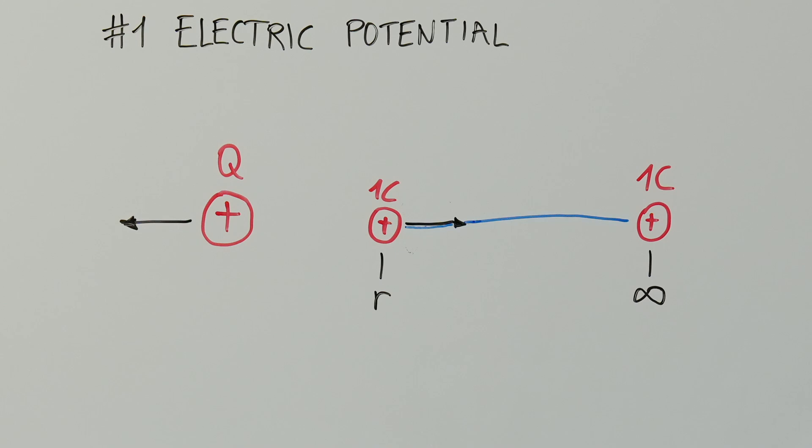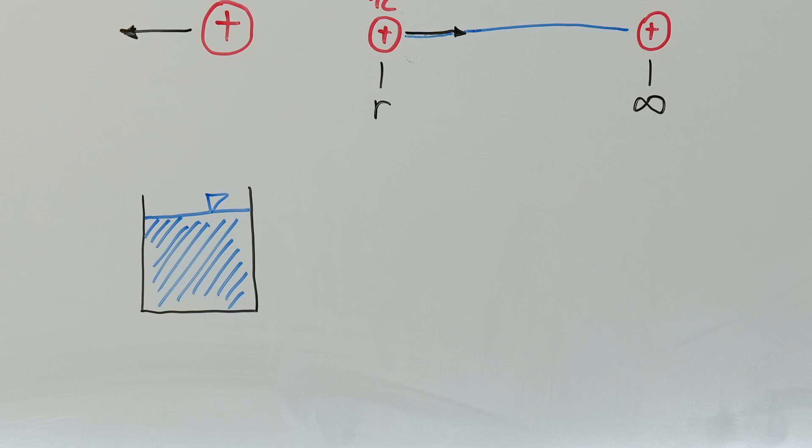Let's use the water analogy again to make this concept easier to grasp. Imagine a water tank placed at a certain height. The height at which the water tank is placed corresponds to its potential energy. The higher the altitude of the tank, the more potential energy the water has.